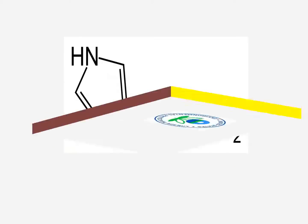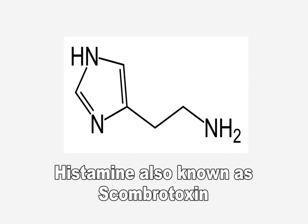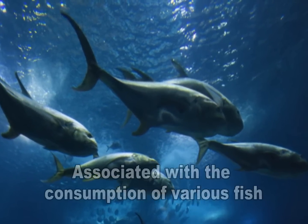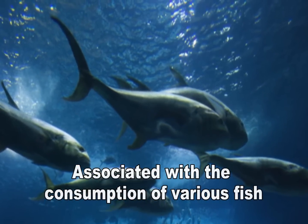Natural food toxins include histamine, which is also known as scombrotoxin. It is associated with the consumption of fish, especially tuna, skipjack, bonito, mackerel, and others.